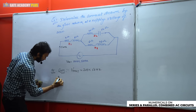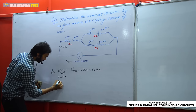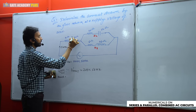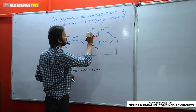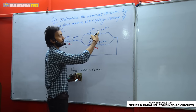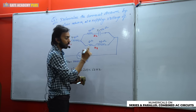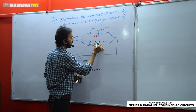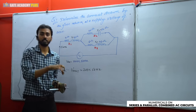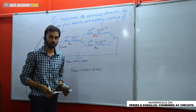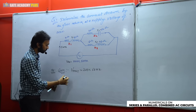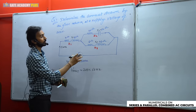Branch 1 has a 4-ohm resistance and a 6-ohm inductive reactance (XL = 6 Ω). Branch 2 has a 10-ohm resistance and a 12-ohm capacitive reactance (XC = 12 Ω) — if capacitance in farads is given, you convert it accordingly. Branch 3 has XL = 10 ohms. Here the reactance values are directly given, so no conversion is needed.